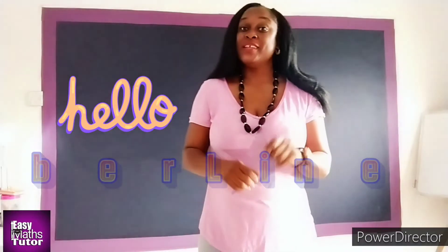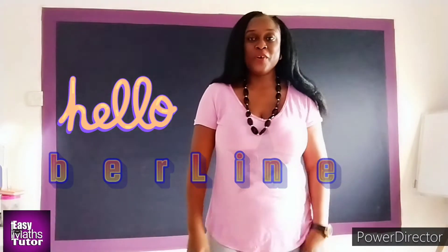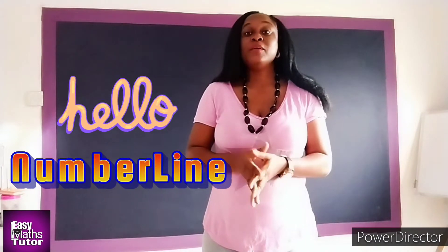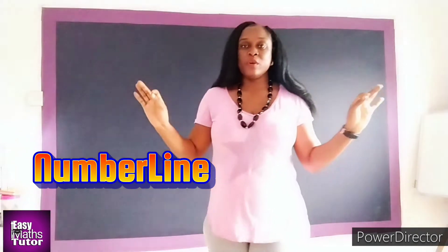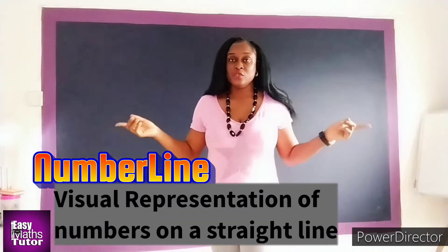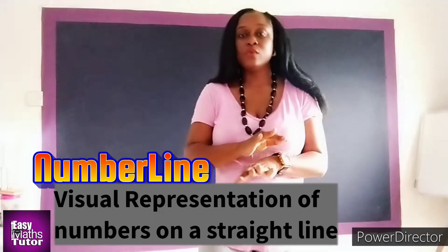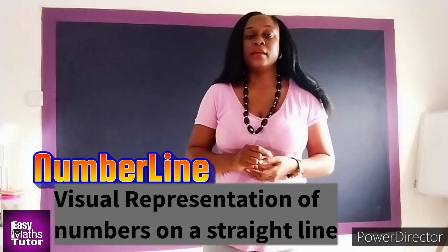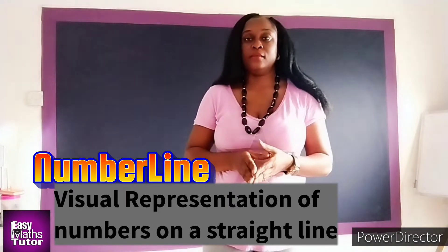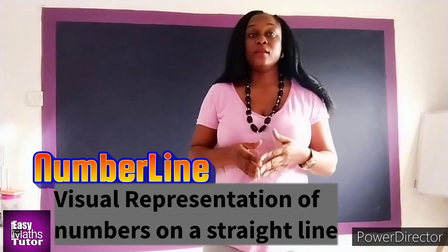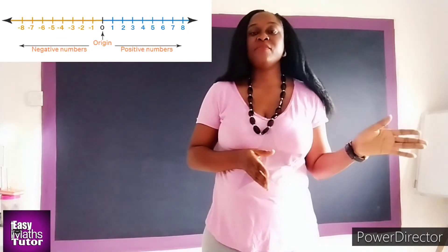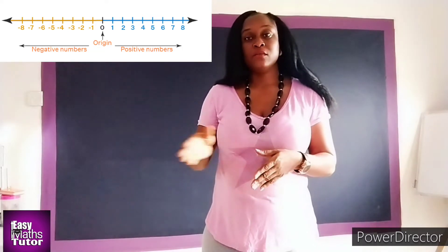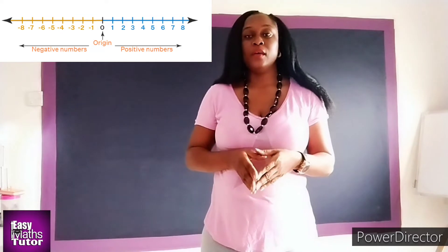Hello friends, and welcome to another edition of Easy Maths Tutor. I'm going to teach you something known as the number line. A number line is a visual representation of numbers on a straight line. It's a horizontal line with zero at the center, which is the origin. The numbers on the left-hand side are positive, and the numbers on the right-hand side are negative.